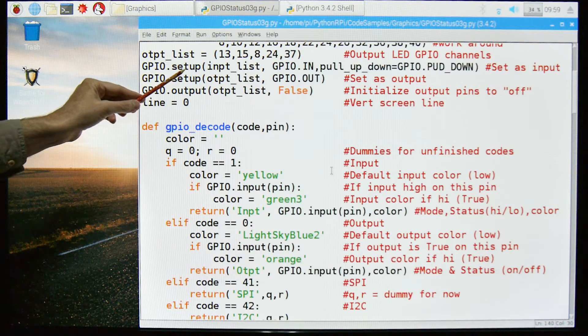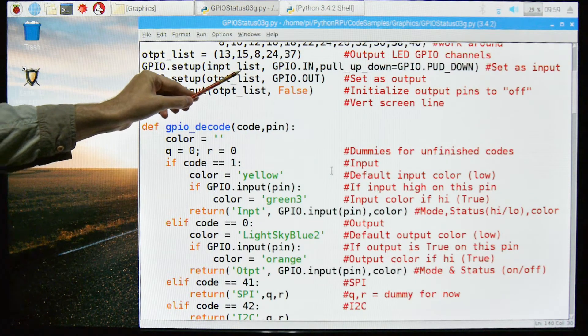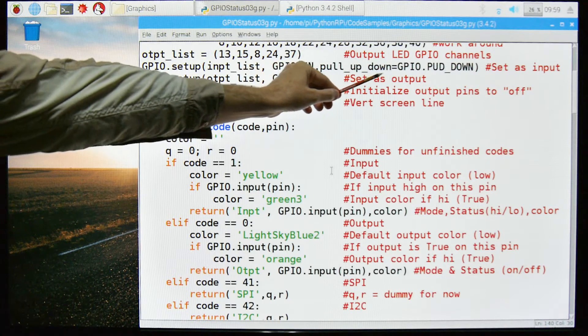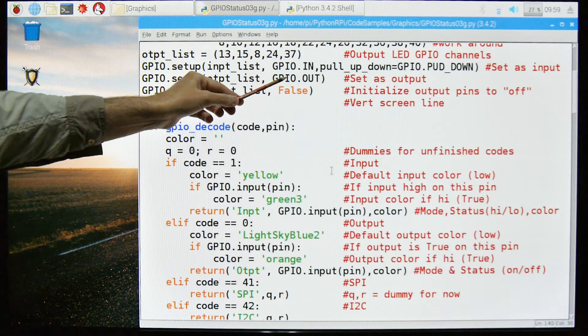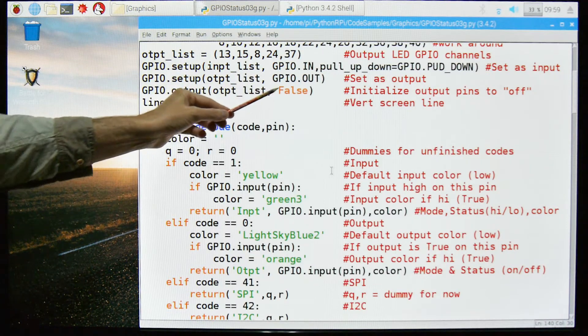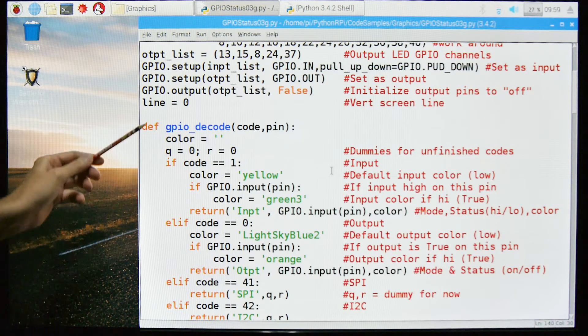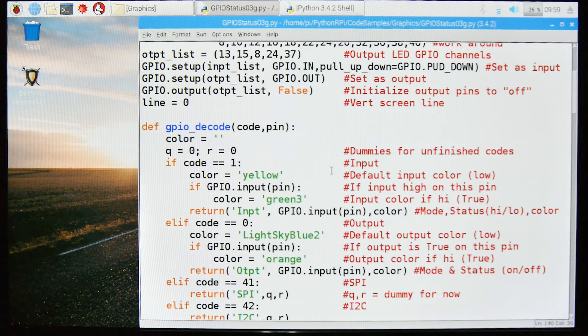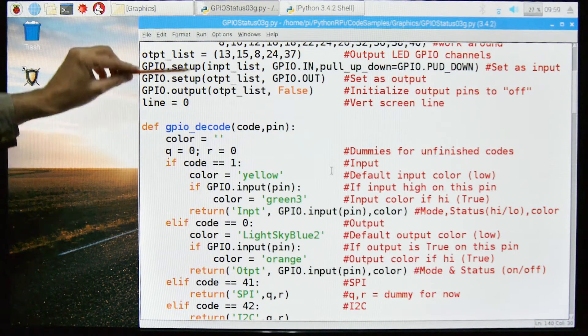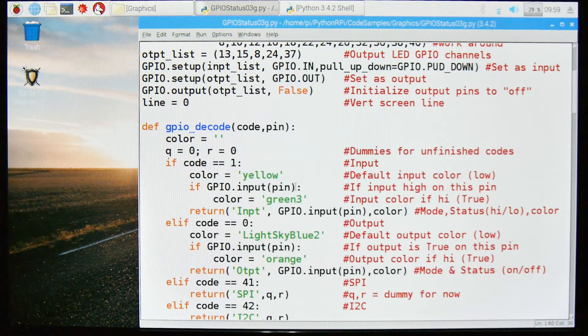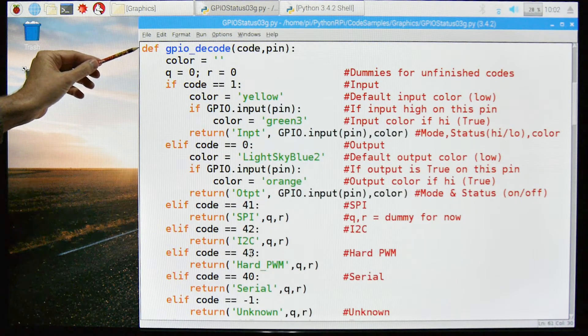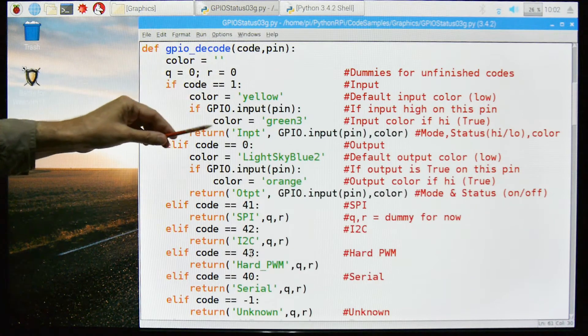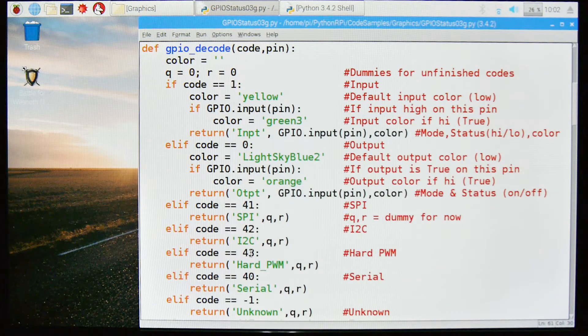Let's scroll down a bit. So we declare our GPIO setup our input list which we just looked at. That was a long one. Then we're going to say pull up down is pull down. The setup for the output list is GPIO out and then I'm going to set them to false just to make sure that they're off when we start up the program. And then this is just a variable on the vertical position of the output.